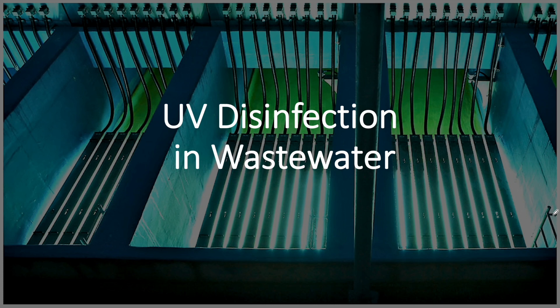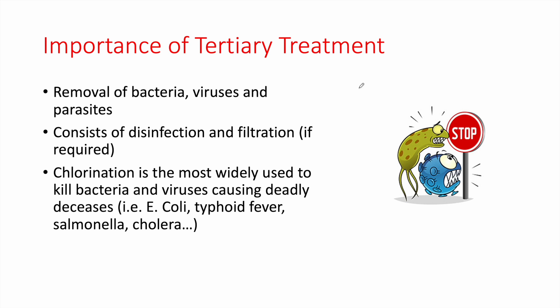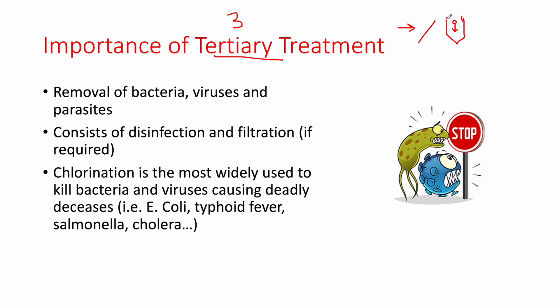We will learn how this system works, how it disinfects the wastewater, and how to select the appropriate UV lamp for wastewater treatment. A UV treatment system is part of the tertiary treatment — the third process in a wastewater treatment plant. Usually we have the pre-treatment stage, which consists of a screen that removes coarse materials. Then we have the primary treatment where solids settle down and we have removal of fat, oil, and grease.